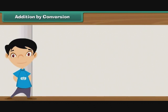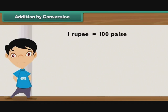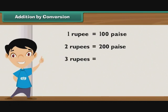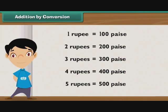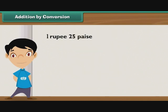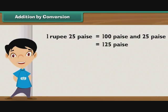Addition by conversion. One rupee is equal to 100 paise. It means two rupees are equal to 200 paise, three rupees are equal to 300 paise, four rupees are equal to 400 paise, and five rupees are equal to 500 paise. So, one rupee 25 paise is the same as 100 paise and 25 paise — that is 125 paise.